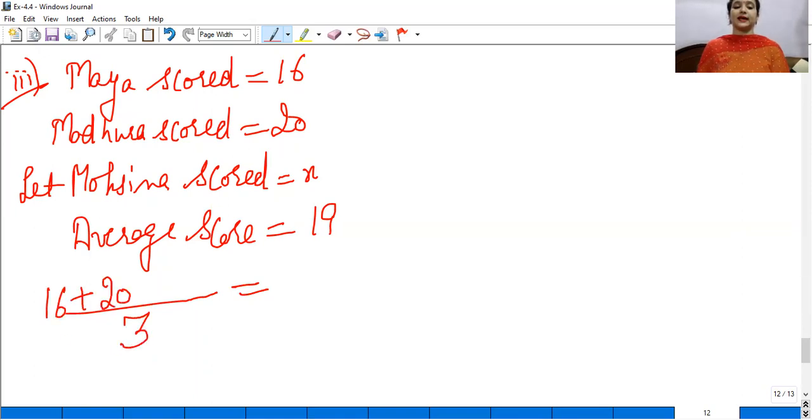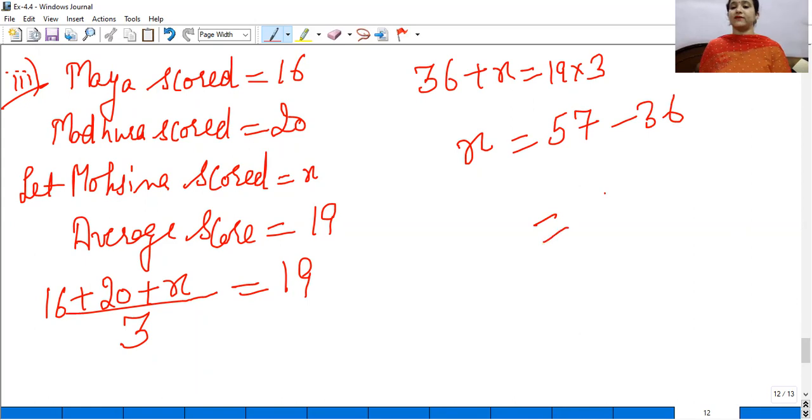Sum of observations divided by total number of observations. 3 persons we're talking about. 1 has 16, 1 has 20, 1 has x. We need to find it. So 20 plus 16 is 36 plus x. 3 goes to the other side and multiplies. 57.